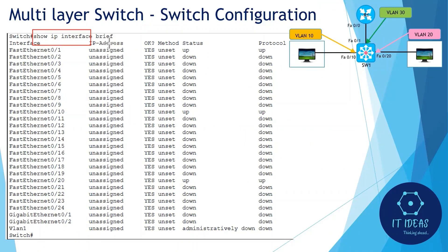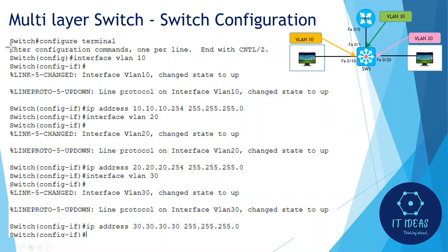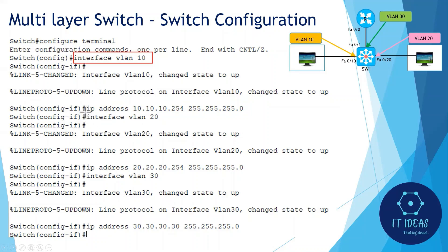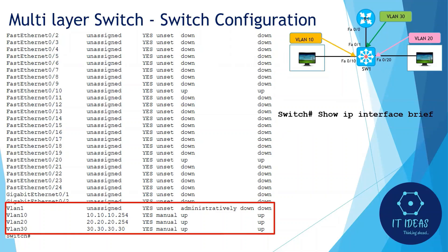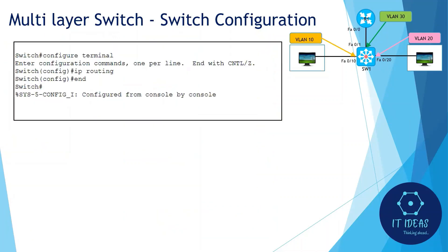The output of 'show ip interface brief' shows that VLAN 1 is already present as the default virtual interface. We now need to create virtual interfaces for VLAN 10, 20, and 30. In global configuration mode, use 'interface vlan 10' to create the Switched Virtual Interface for VLAN 10, then assign an IP address in the VLAN 10 subnet — VLAN 10 hosts will use this as their default gateway. Create virtual interfaces and assign IP addresses for VLAN 20 and VLAN 30 the same way. The 'show ip interface brief' command confirms virtual interfaces for VLAN 10, 20, and 30 are created. Finally, use the 'ip routing' command to enable IP routing on the layer 3 switch — this is a very important step.